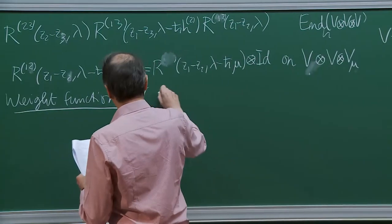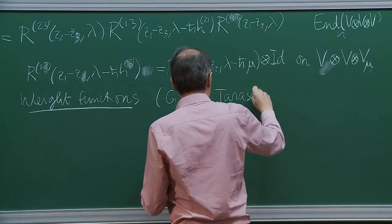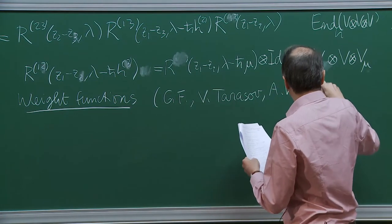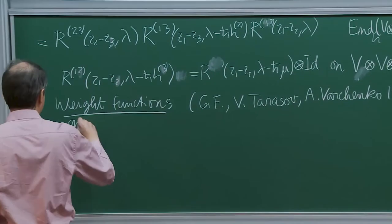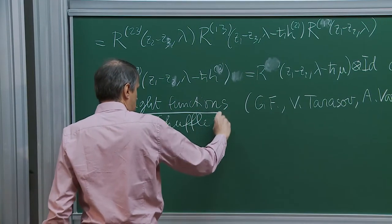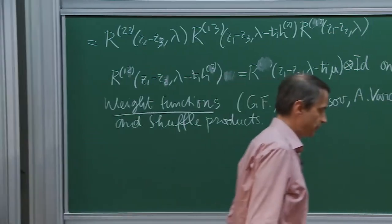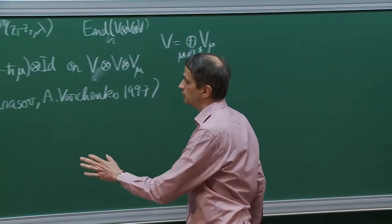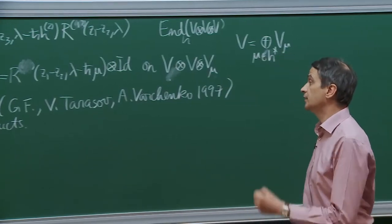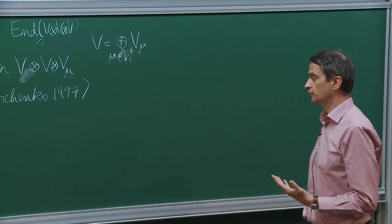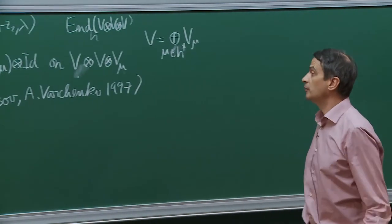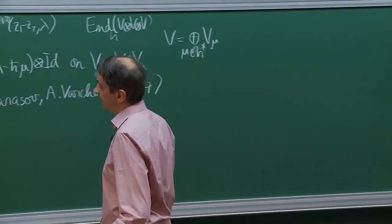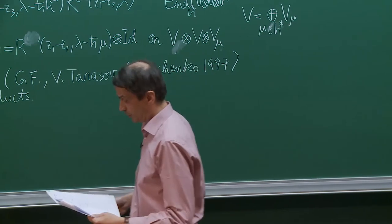This is a paper with Tarasov and Varchenko, about 20 years old, where we describe those weight functions in terms of shuffle products — or unshuffle products. In that paper we wanted to construct weight functions associated to any kind of evaluation representations, and in particular for evaluation Verma modules. This also gave a construction of the R-matrix for evaluation Verma modules for arbitrary pairs of weights — a functional realization of representations of the elliptic quantum group.